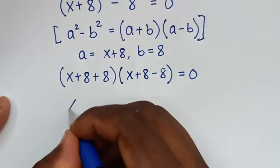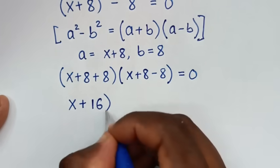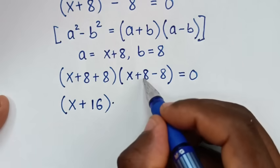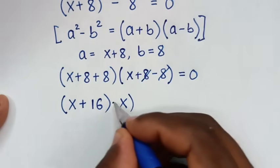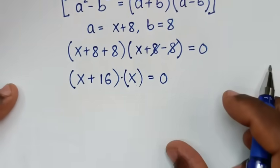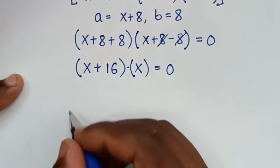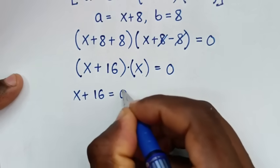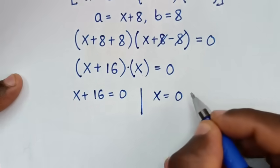In the next step: x + 8 + 8 is x + 16, and 8 − 8 = 0 so those cancel, leaving (x + 16)(x) = 0. From here we have two solutions: x + 16 = 0 and x = 0.